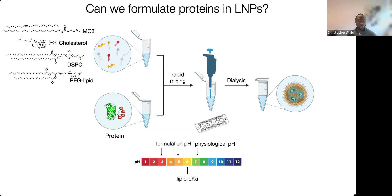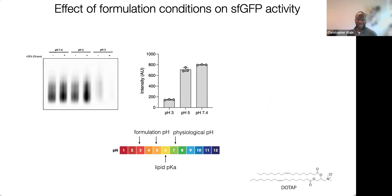Two things anathema to proteins are low pH and ethanol, so we wanted to ensure proteins were stable to these formulation conditions. Using a pH of 3 is not conducive to proteins. Looking at protein recovery on gel, pH 3 with or without 25% ethanol — the protein is essentially gone. Looking at GFP fluorescence, it completely drops at pH 3 but recovers at pH 5 and 7.4. Interestingly, the small amounts of ethanol for rapid mixing don't really affect protein fluorescence and structure much — it's really the low pH that was killing the protein.